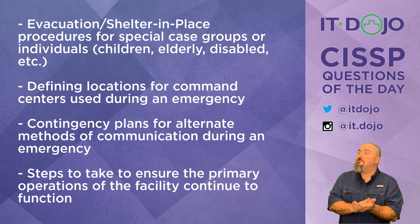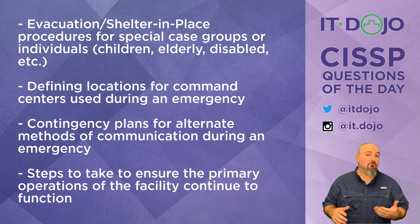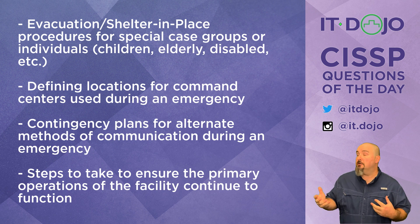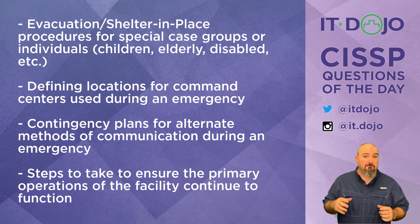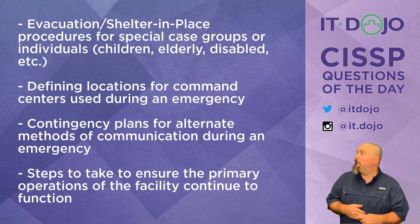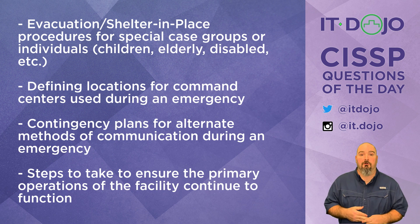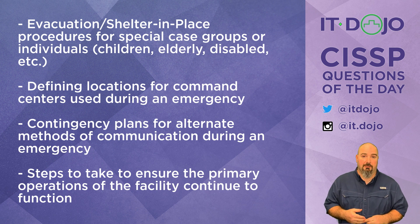The first choice says that you would not consider evacuation plans for special case groups, like somebody who's disabled, or children, or elderly people. That is not true — you would absolutely have that be part of something that is included in an occupant emergency plan.